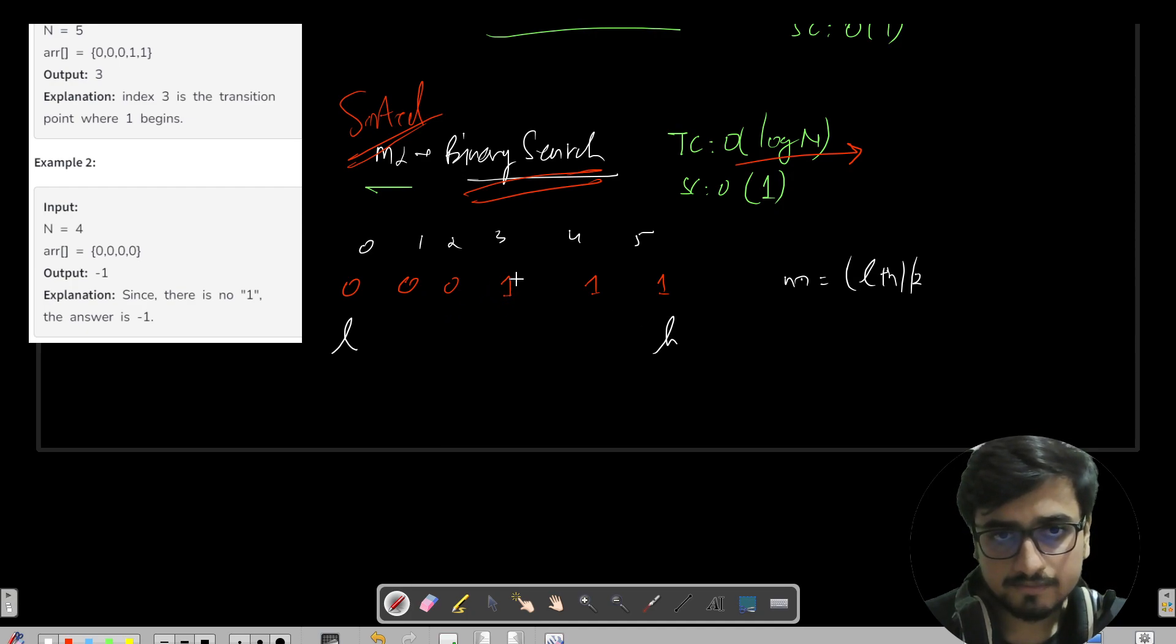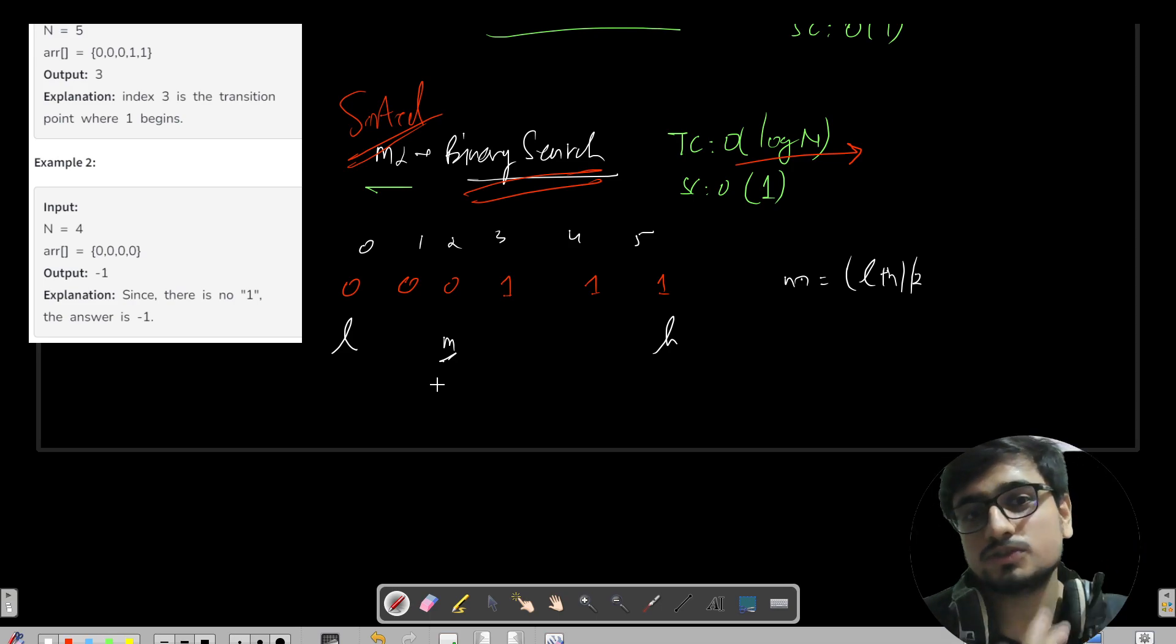We calculate mid, m. M is nothing but l plus h by 2. So this will give you, it will be coming at 2. Five plus zero by two will give you 2, so this will be your mid, your first mid.